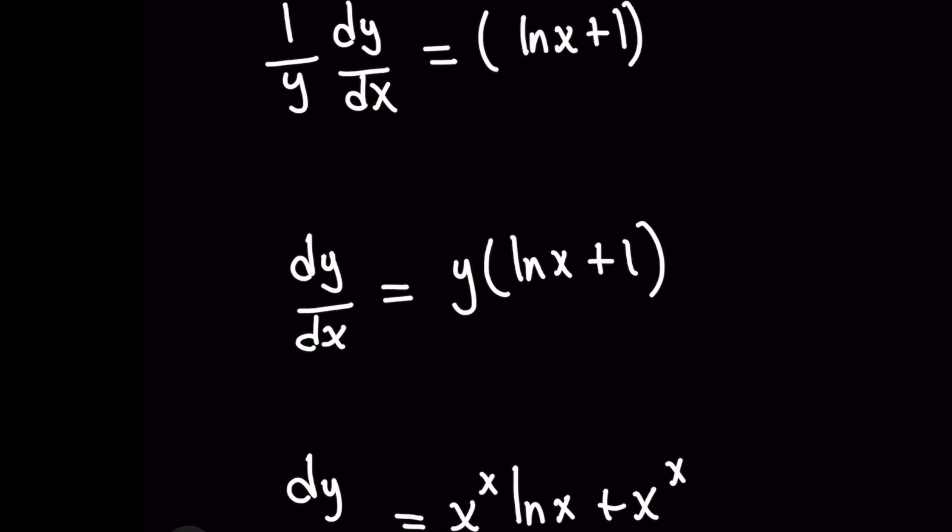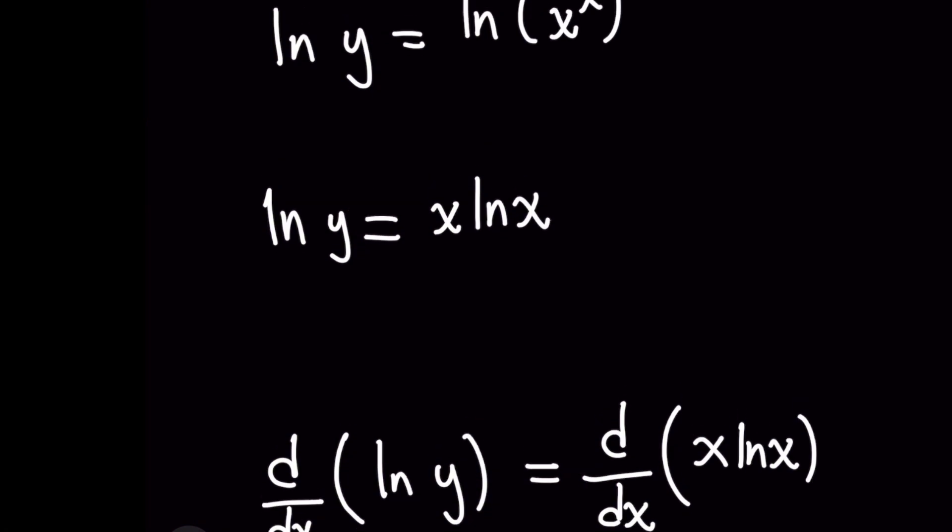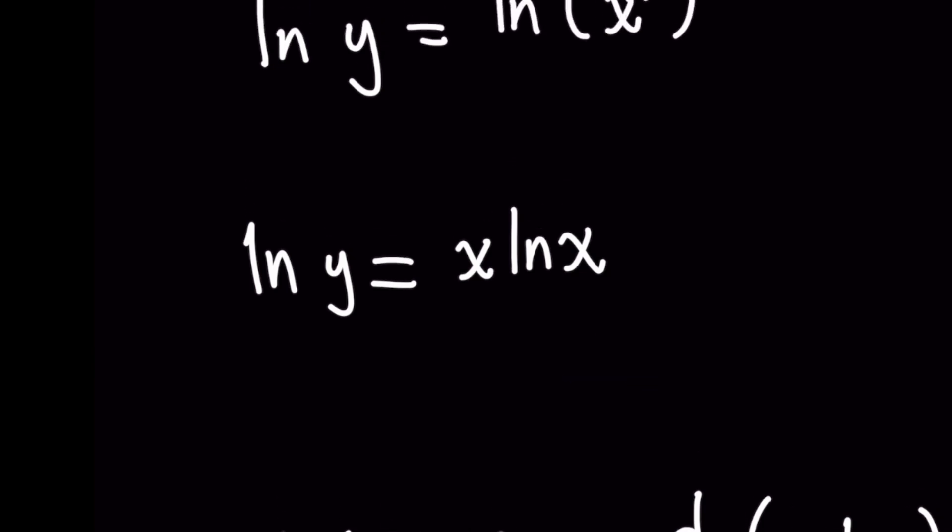But also I want you to recognize one thing that's really important, right? When we were dealing with this, this was an easier case where we had ln y equals x times ln x, where when you're taking implicit differentiation here, the letter y was by itself on the left and the letter x was by itself on the right.